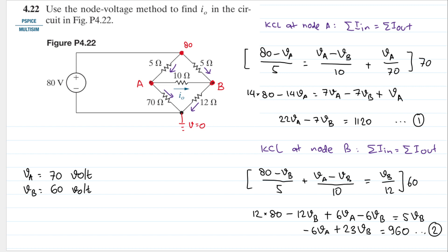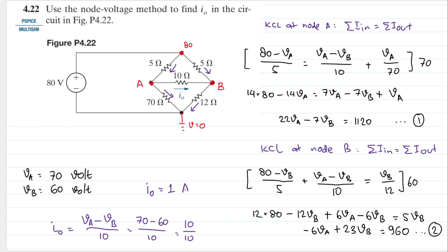The question asks for i0, not Va and Vb, but i0 is easy to find. i0 is the current between node A and node B, so i0 equals Va minus Vb divided by 10. That is 74 minus 64 divided by 10, which equals 10 divided by 10, so i0 equals 1 ampere. That is the final answer for problem 4.22. Thank you for watching — see you in the next video!